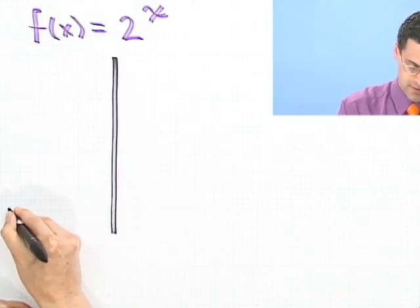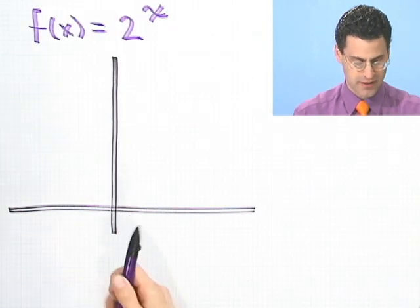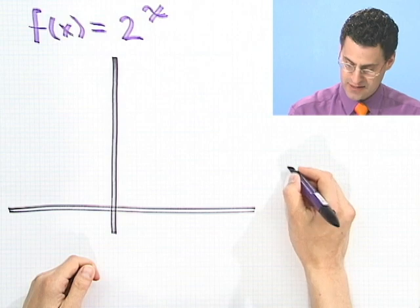So here's my axis. I can make a little table over here off on the right and put in x's and f of x's.